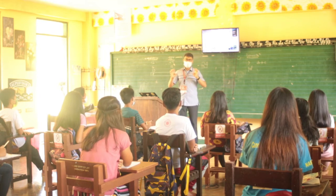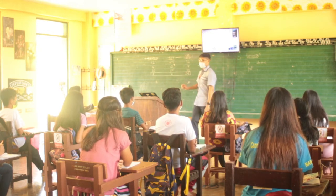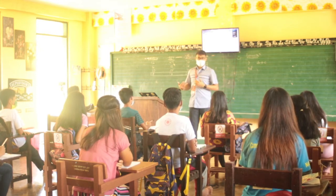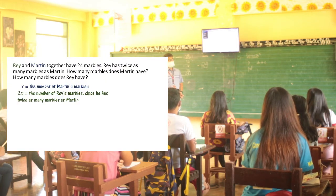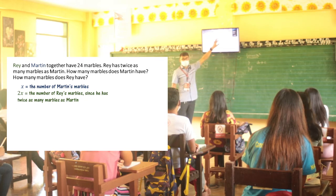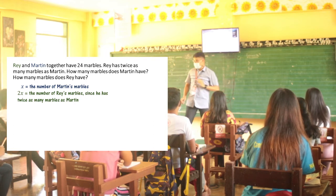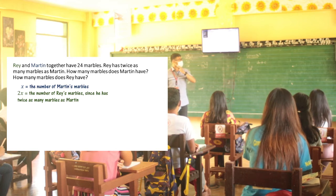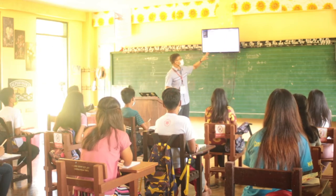When we talk about algebra, remember we use letters or variables to represent something. In this case, we will let X represent the number of Martin's marbles. So X is Martin's marbles, and 2X — twice — represents Ray's marbles, since Ray has twice as many marbles as Martin.